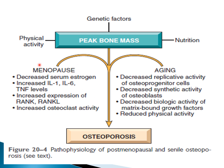In menopause, decreased serum estrogen increases the levels of interleukin-1, interleukin-6, and tumor necrosis factor, all of which increase osteoclastic activity. Anything that reduces osteoblastic activity and bone production, or increases osteoclastic activity and bone resorption, will lead to osteoporosis. This is why females are subject to two risk factors — aging and the postmenopausal stage — making them more prone to osteoporosis.